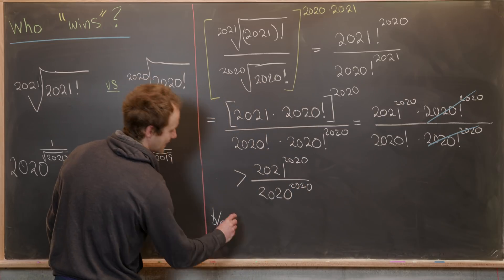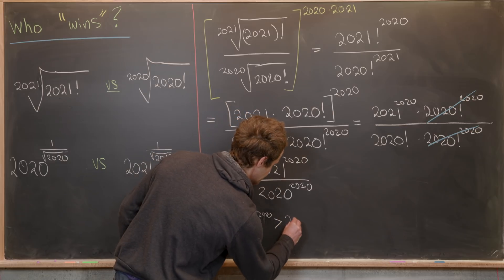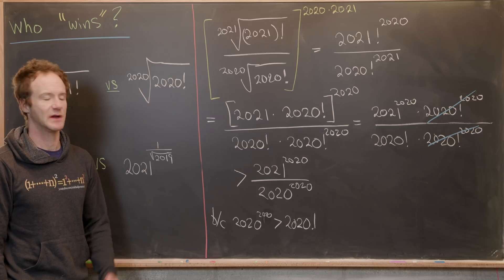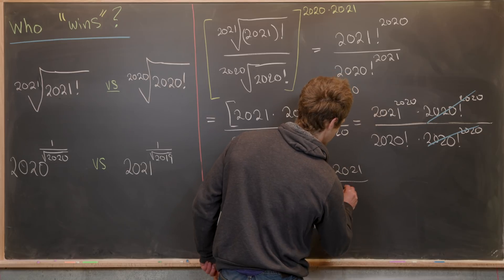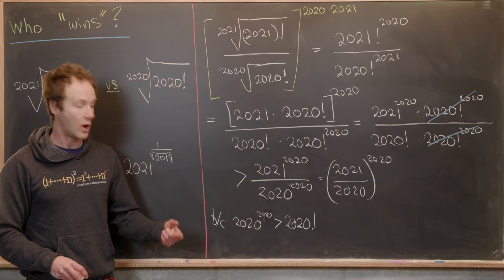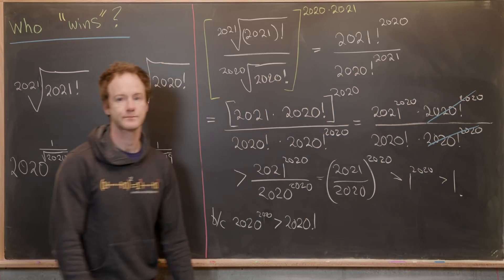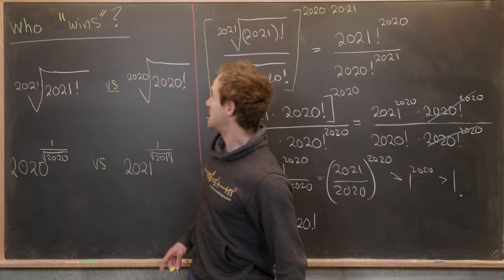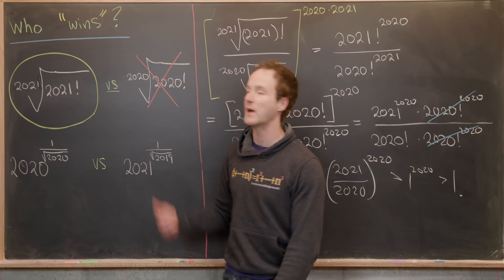Since 2020 to the 2020 is clearly bigger than 2020 factorial — because 2020 is bigger than 2019, bigger than 2018, and so forth — we can group these objects as 2021 over 2020, all to the power of 2020. That's a number larger than one raised to the power of 2020, which is larger than one. So we've shown this ratio is larger than one, meaning the 2021st root of 2021 factorial is bigger. Definitively, 2021 beats 2020.